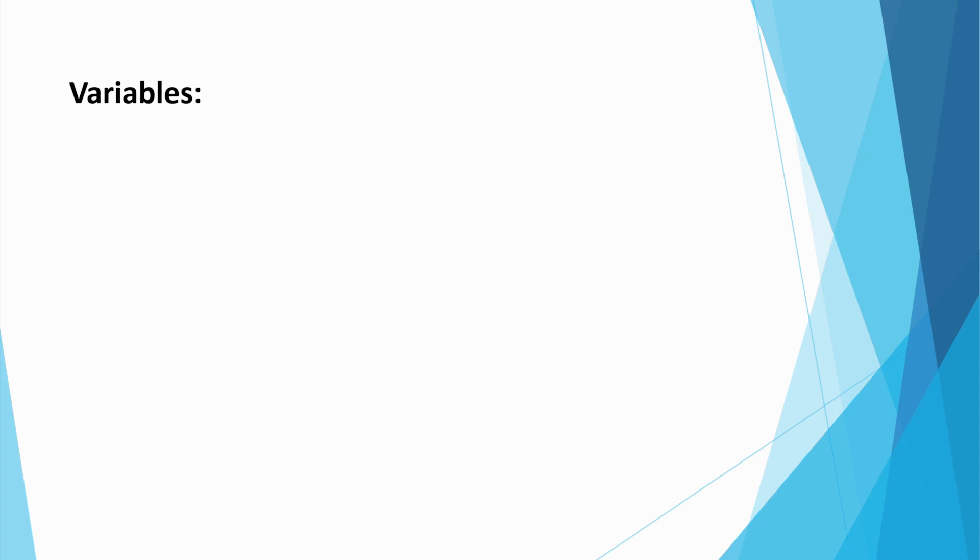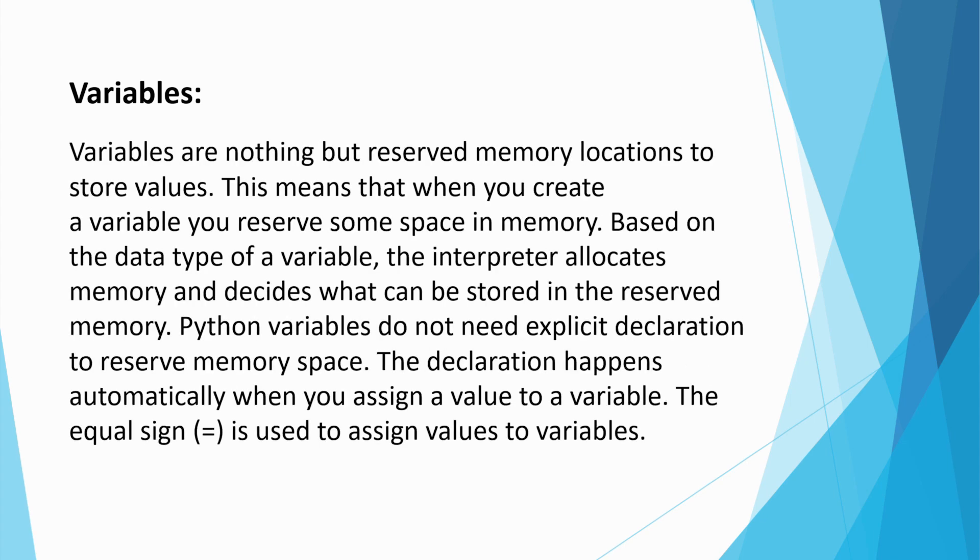Variables are nothing but reserved memory locations to store values. This means that when you create a variable you reserve some space in memory. Based on the data type of a variable the interpreter allocates memory and decide what can be stored in the reserved memory. Python variables do not need explicit declaration to reserve memory space. The declaration happens automatically when you assign a value to a variable. The equal sign is used to assign values to variables.